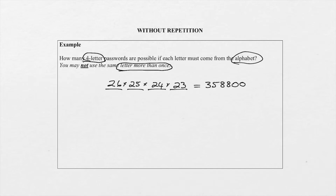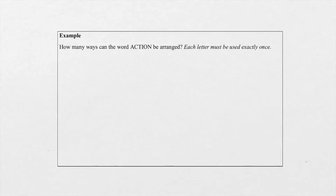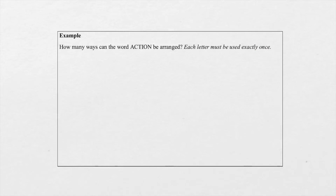Let's look at the second example on without repetition. In this example you will notice it's the same again as in episode two. We want to know how many words — and please remember, these words don't always make sense — can we arrange by using the letters from the word ACTION. So we can only use those six letters. But the important thing is each letter must be used exactly once, so that means there is no repetition.